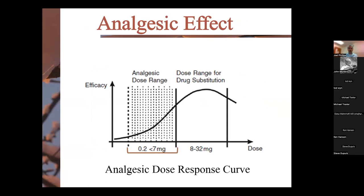Looking at sublingual dosing and analgesic effect: at eight milligrams up to 32 milligrams, we're seeing peak effect — that's more in the addiction medicine dosing range. For analgesia, the dose range of 0.2 to less than 7 milligrams really gives a good effect. You can go higher — some patients I have on 16 milligrams — but generally you get a good, rapid response at those lower analgesic doses.